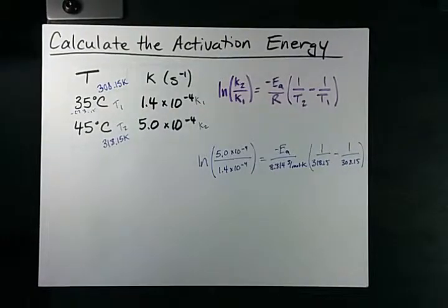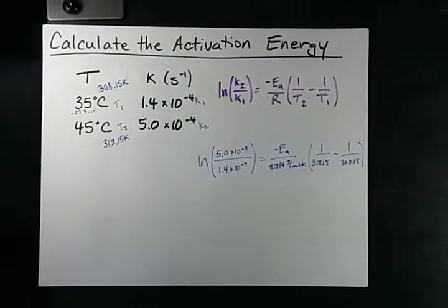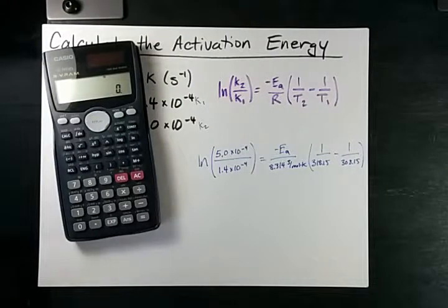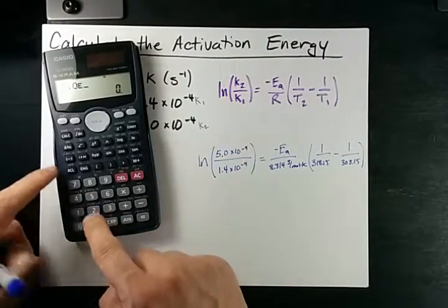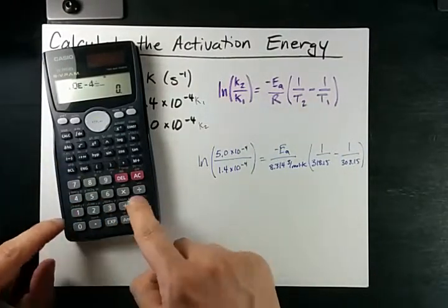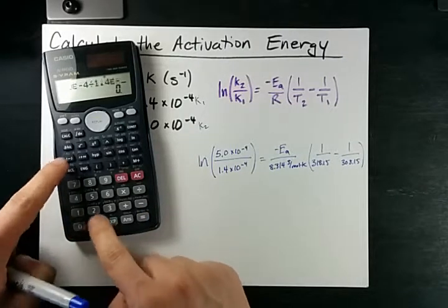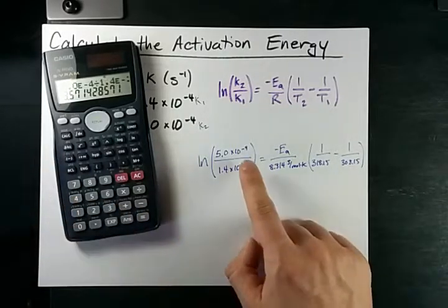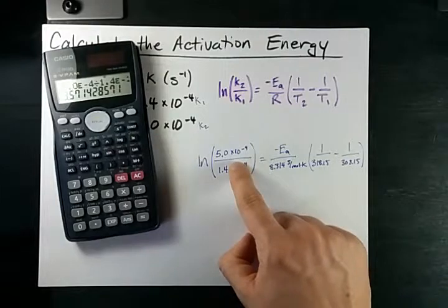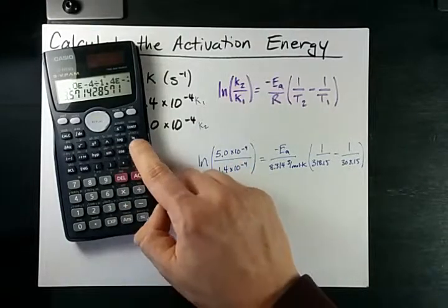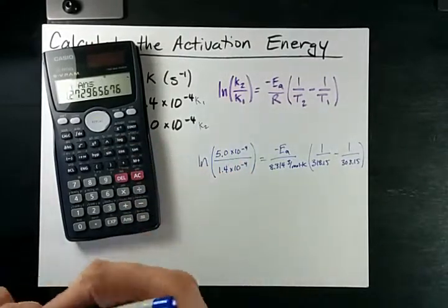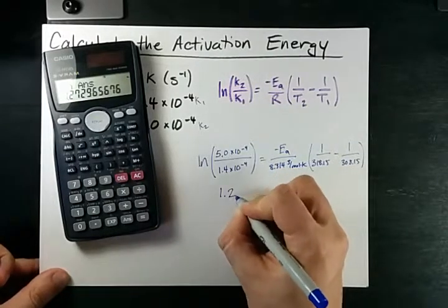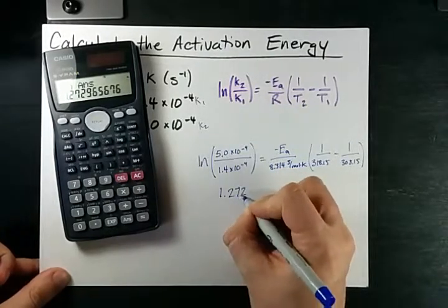At this point, there's a lot of math to do. So with the calculator, 5.0 times 10 to the negative 4 divided by 1.4 times 10 to the negative 4 is 3.57. Now I'm also going to take the natural log of that and I end up with 1.2729.